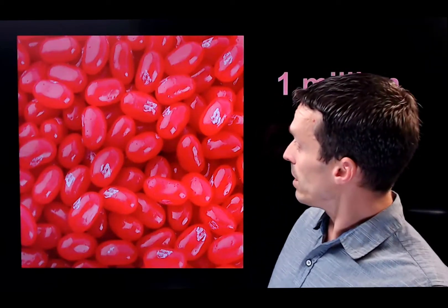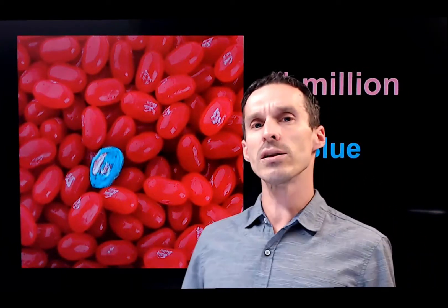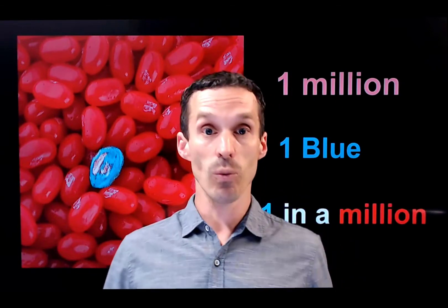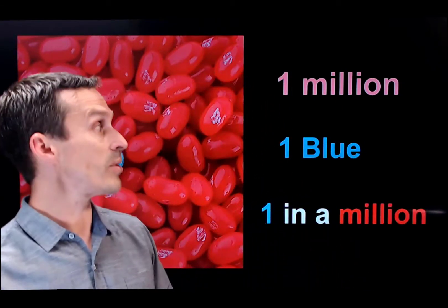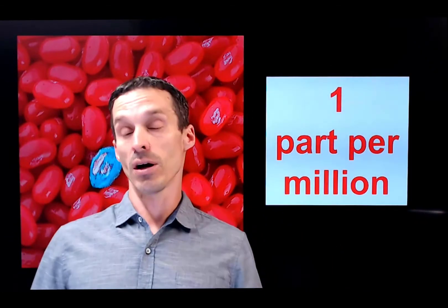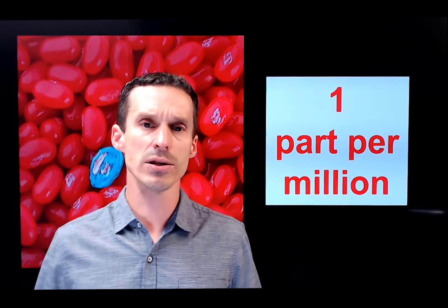So out of those million jelly beans, let's just change one of them. Let's make one single jelly bean blue. That's one in a million. That's one part per million. So that's all that we're talking about when we talk about these units of concentration. It's just a ratio.